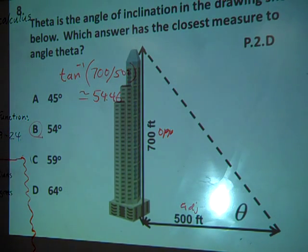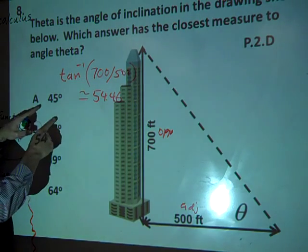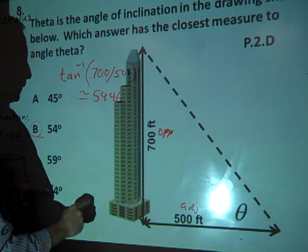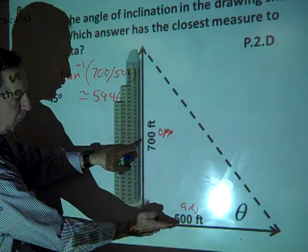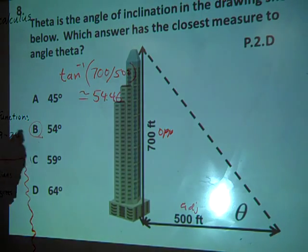Just trying out the angles. You can take tangent of 54 and then see which one is the closest to 700 over 500. So that's another way of doing it.